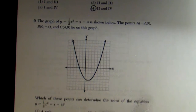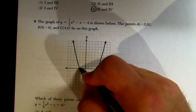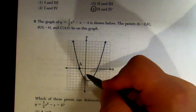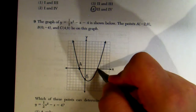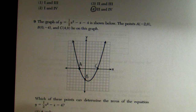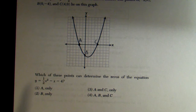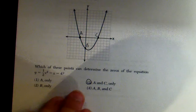Number 9: the graph of y = (1/2)x² − x − 4 is shown. Point A is at (−2, 0), Point B is at (0, −4), and Point C is at (4, 0). Which points determine the zeros of the equation? The zeros are where the graph crosses the x-axis, so that is A and C. That is choice 3.